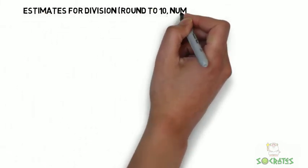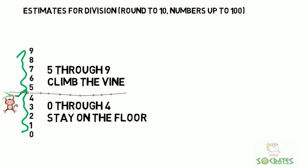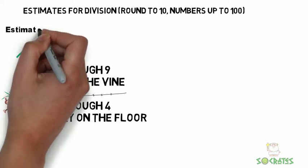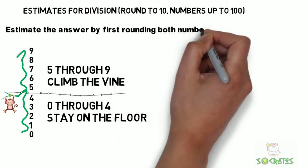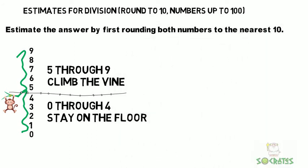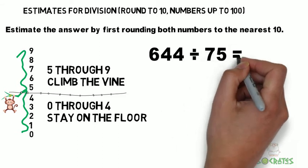Estimates for division, first by rounding to the nearest 10. Remember the rules for rounding: 5 through 9 goes up, and 0 through 4 goes back down. Estimate the answers by first rounding both numbers to the nearest 10.